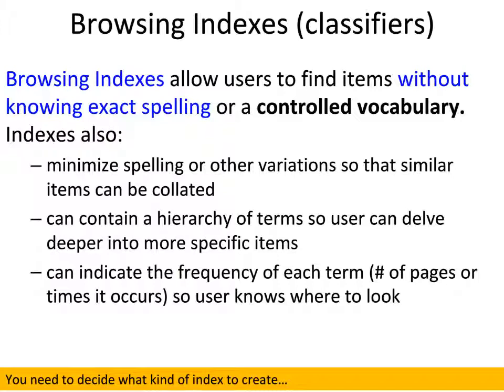The next step after gathering documents and configuring your plugins is to decide what kind of indexes you want. Browsing indexes are very useful. While a search function is handy, browsing indexes solve some of the problems with search engines — the person doesn't have to know the spelling or your controlled vocabulary. They can drill down from general to specific things, and they also get faceting information — they can see the frequency or number of records under any index term.